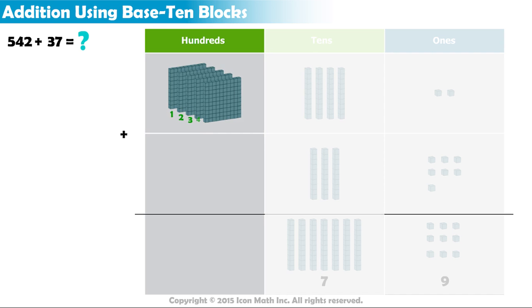Finally, we have 5 flats here from the first number, while the second number doesn't have any hundreds, which means the total number of flats is 5.